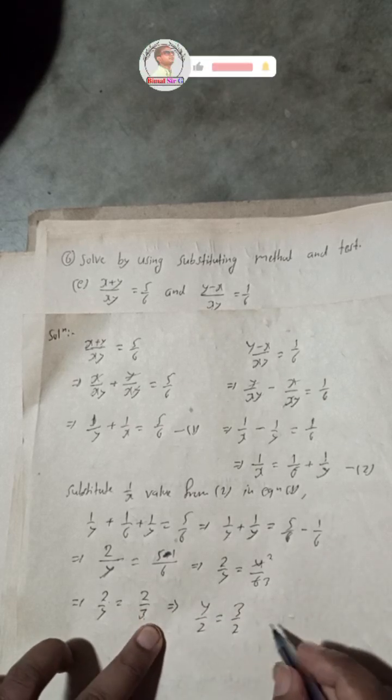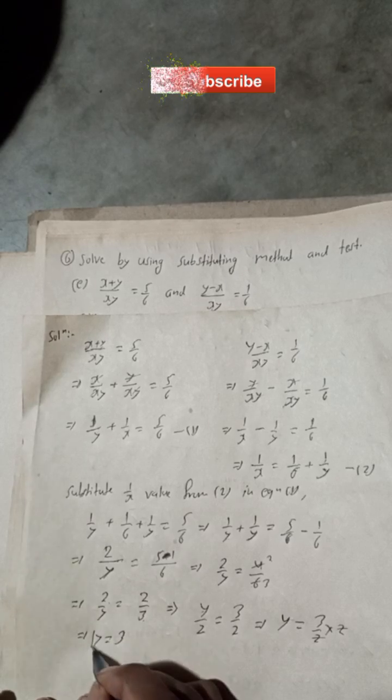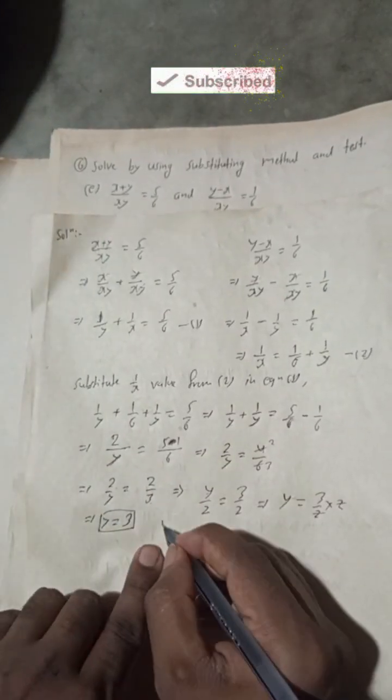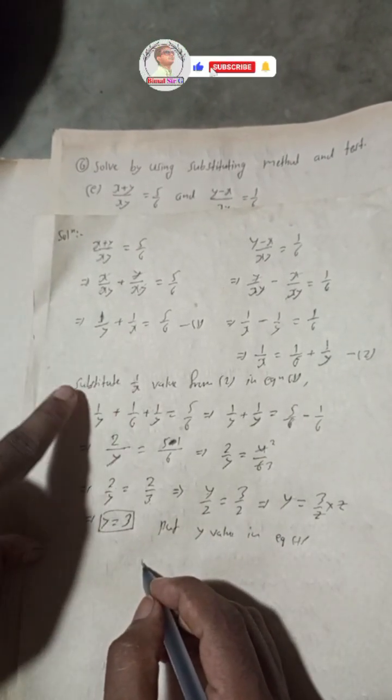From 2/y = 2/3, we can cross-multiply or reciprocate: y/2 = 3/2, which gives us y = 3.